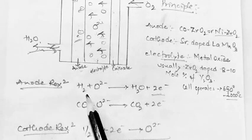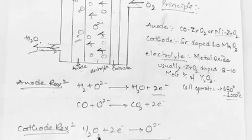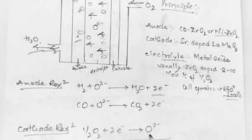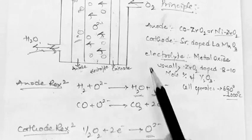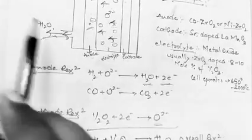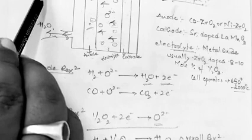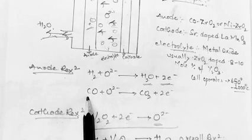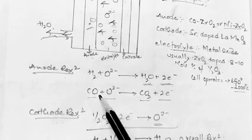At the cathode: O₂ + 4e⁻ → 2O²⁻. The oxide ion then reacts with hydrogen at the anode: H₂ + O²⁻ → H₂O + 2e⁻. In addition to hydrogen, other fuels can also be used, such as carbon monoxide or reformed fuel. If carbon monoxide is used as fuel, it reacts with the oxide ion to produce carbon dioxide and two electrons: CO + O²⁻ → CO₂ + 2e⁻. The cathode reaction remains the same regardless of the fuel used.